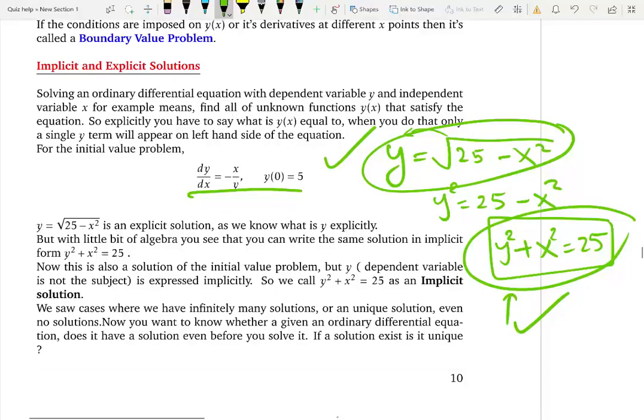Both of them are solutions. But in one case you explicitly explain what the unknown y is equal to. But in the second case, it's not explicitly explained, it's implicit. You have to do some work to find what is y equal to. That's the difference between an implicit solution and an explicit solution. Alright, so that's it. Thank you very much.